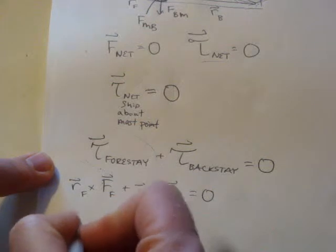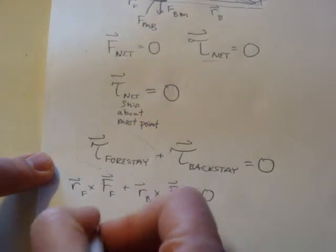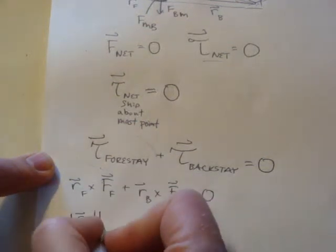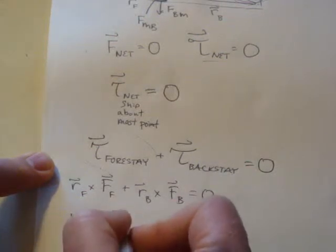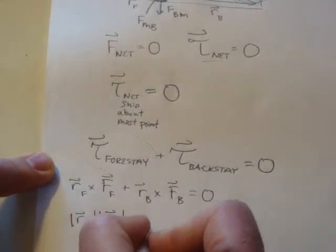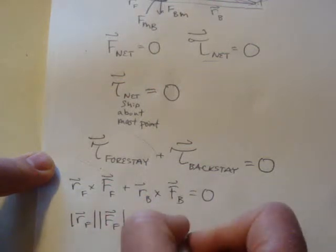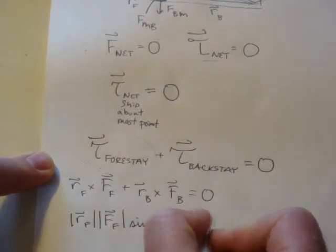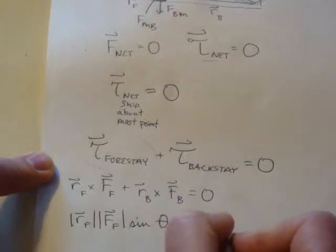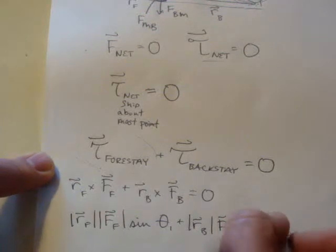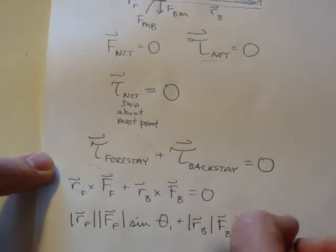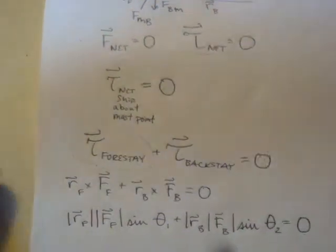So we can talk about the magnitude then. We're just going to use the magnitude of RF times the magnitude of the forestay force, times the sine of the angle between them, which we call theta one, plus the magnitude of RB times the magnitude of FB, which we don't know, times sine of the angle between those, which is theta two, which we happen to know is 45 degrees from just kind of looking at the picture.